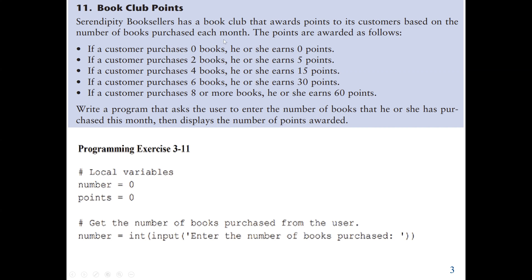We can formulate up to five conditions here. The problem says: write a program that asks the user to enter the number of books purchased this month, then display the number of points awarded. The conditions tell us the number of points the customer earns based on the number of books bought. So our input will be the number of books, and we award points based on that number.